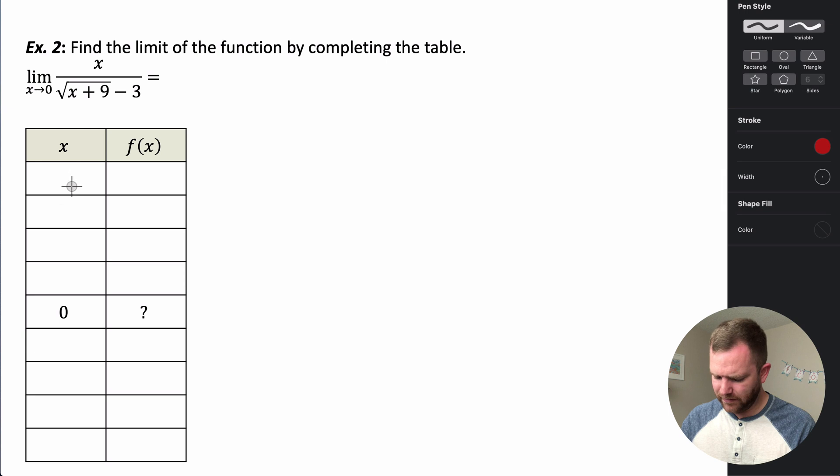So what numbers am I going to use? Well, if I'm trying to get close to zero, I have to look at it coming in from both directions. So I have to look at it coming in to zero from numbers to the left of it on the number line and numbers from the right of it on the number line. And so I'm going to pick some numbers.